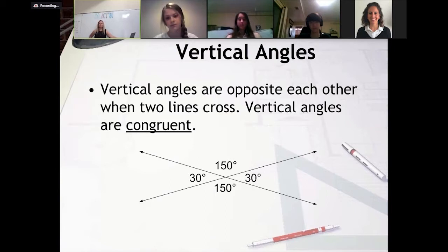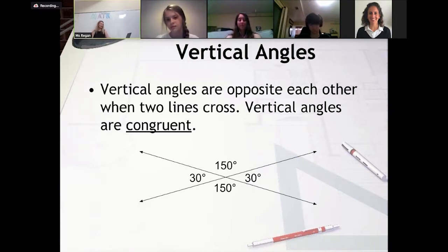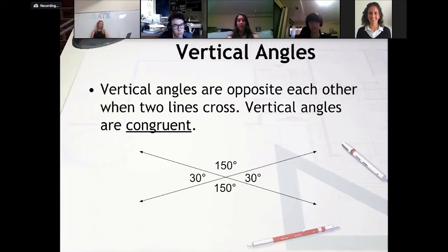Does anybody notice anything about the angles across from each other? What are you observing? 'They're equal — they're the same.' So that 30 and the 30 opposite are congruent, and 150 and 150 are the same. What else do you notice about the 150 and the 30? 'They add up to 180 degrees.' That's right — why? 'Because they make a straight line.' Great, thank you.